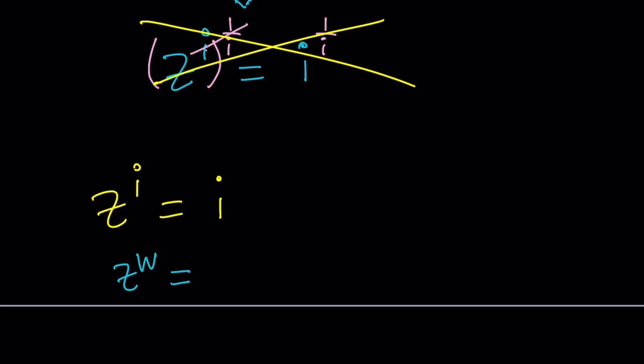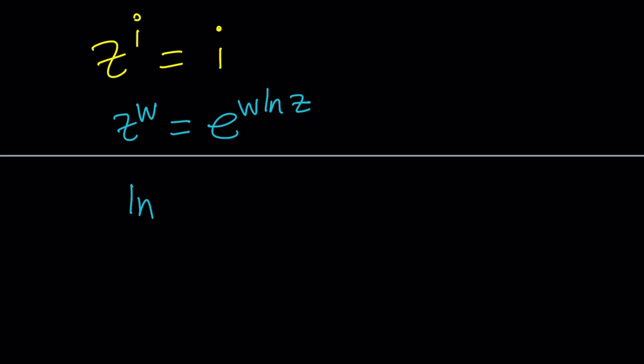You hopefully know what it is but if not then it can be written as an exponential e to the power w ln z and you might be wondering what is ln of a complex number and I'll give you the definition ln of a complex number is remember z is a complex number so you're talking about not just like a real logarithm but a complex logarithm here so we can write it as ln of the absolute value of z plus i times the argument of z.